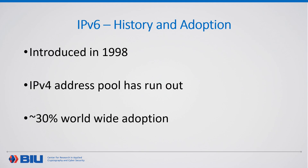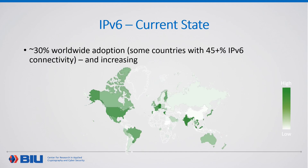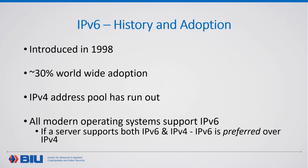But what is the current adoption state of IPv6? We are talking about 30% worldwide adoption, with some countries having almost 50% IPv6 connectivity, and these numbers are now increasing. An important note is that all modern operating systems support the IPv6 protocol. Furthermore, for cases where a client with IPv6 connectivity attempts to connect to a server that supports both IPv4 and IPv6, IPv6 would be preferred by these operating systems. This means that users might be using IPv6 unknowingly.